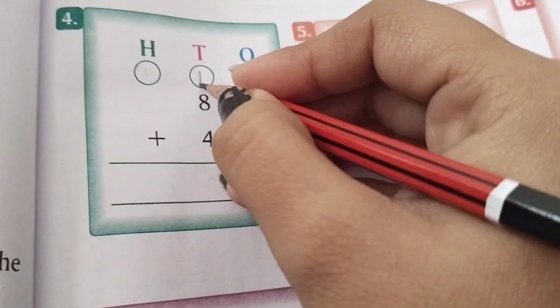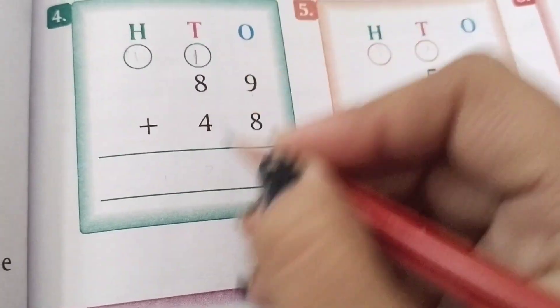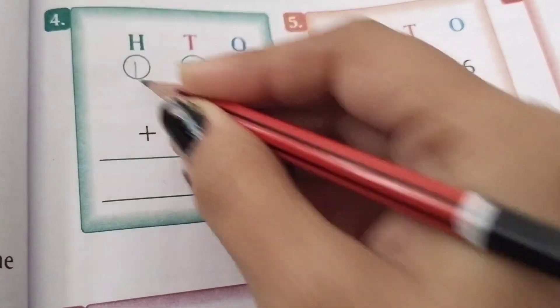9 plus 8 equals 17. We write 7 with 1 carried to the top. Then 13, then 1 here.